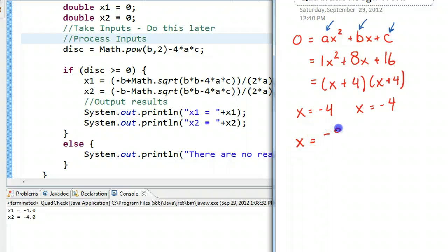we have negative 8 plus or minus the square root of 8 squared minus 4 times 1 times 16 over 2 times 1.